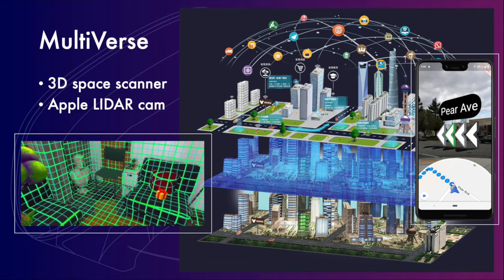Believe it or not, we have actually already started the process to build this multiverse. For example, in our current devices, most of us have three cameras on the back side. One of those cameras has the function to scan the room. And in the latest version of Google Maps, we can actually directly render the arrow, the direction, directly on the street.